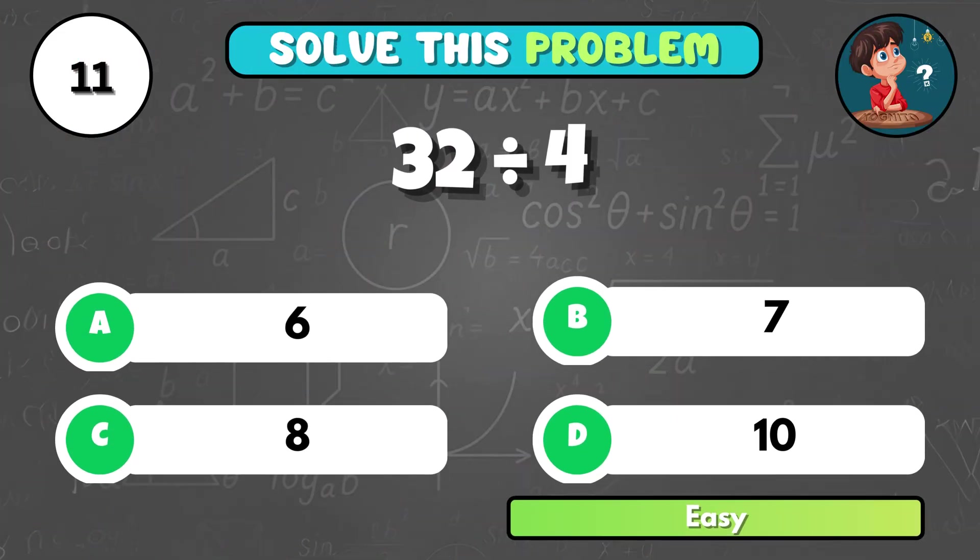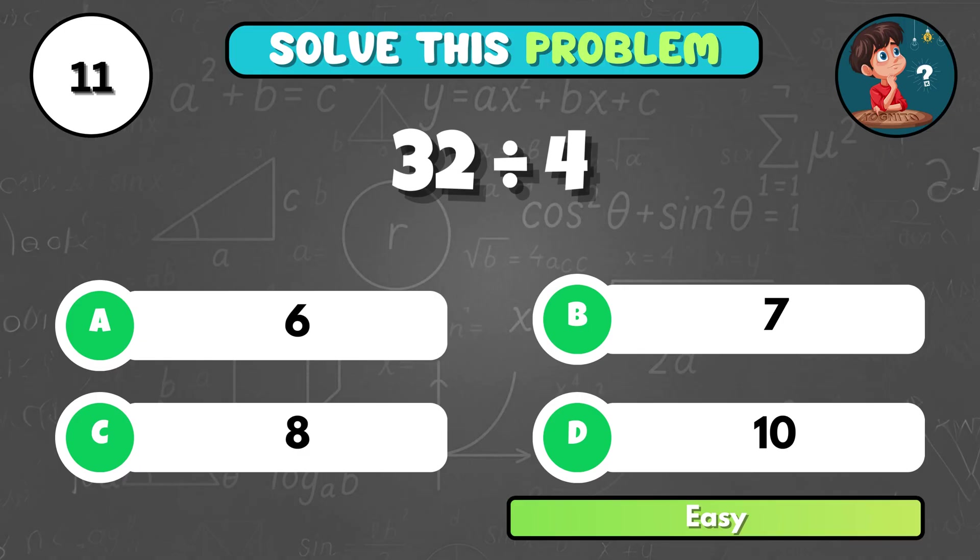Can you work out 32 divided by 4? It's C, 8.